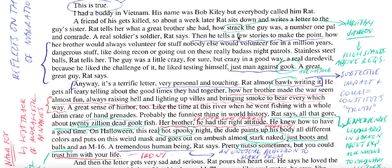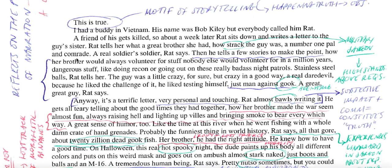Importantly, any time you hear a direct reference to the process of storytelling, it is a resurfacing of this motif of storytelling as the only way of communicating subjective, accurate truth. It also usually functions as a metafictional reflection on the status of writing generally. Looking at the passage describing Rat Kiley's recollection in the letter, most of the language is highly uncomfortable for us to read as ordinary citizens — a challenge O'Brien lays down.